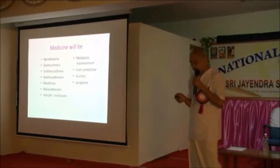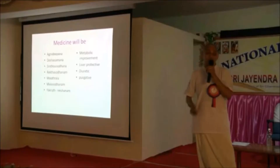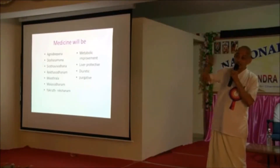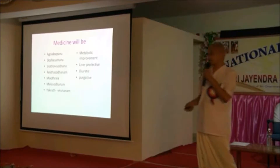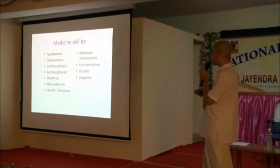The medicines will be: agni deepana, dosha shamana, srotas vishodhana, rakta shodhana, mutra-mala shodhana, and yakrit tikshana. Because yakrit is the moolam of rakta vaha srotas. Rakta vaha srotas dooshti occurs through yakrit and pliha, which are the moolam of rakta vaha. So metabolic improvement, liver protection, and purgative treatments are indicated.